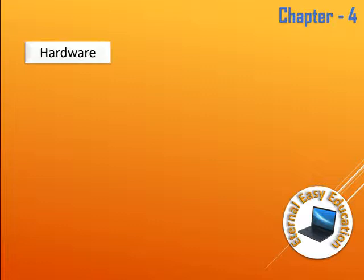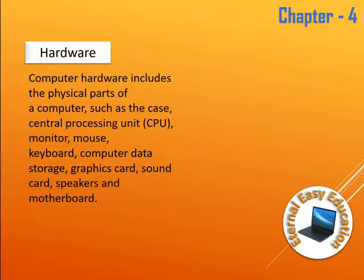What is hardware? Computer hardware includes the physical parts of a computer — the physical components which we are able to see with our eyes and able to touch. We can see the monitor, mouse, keyboard, graphics card, and all the things inside the CPU cabinet.